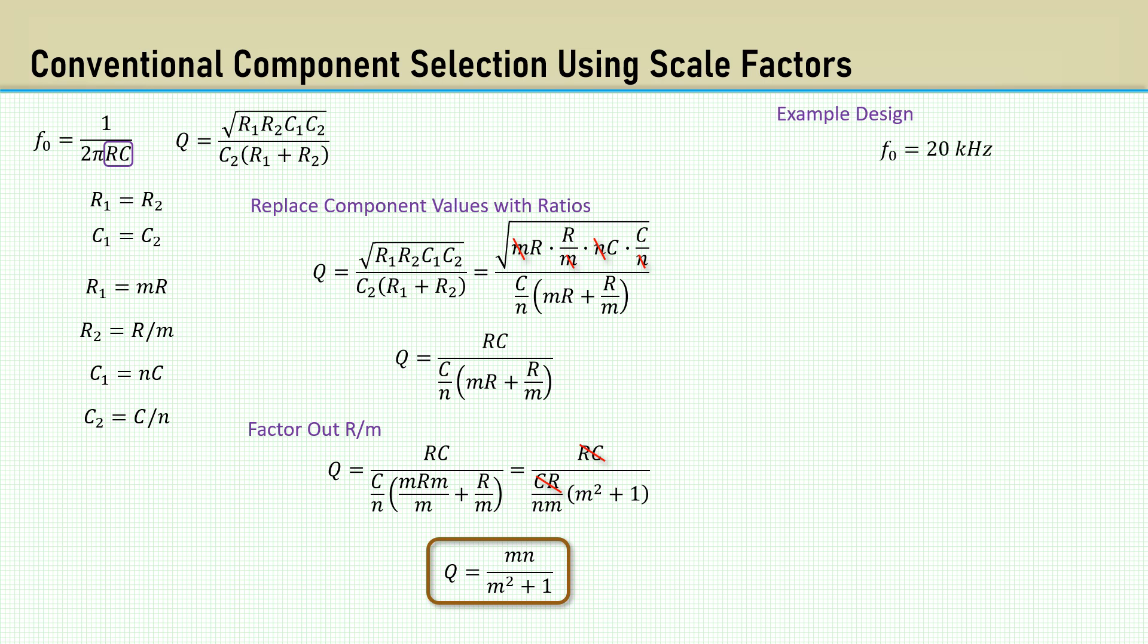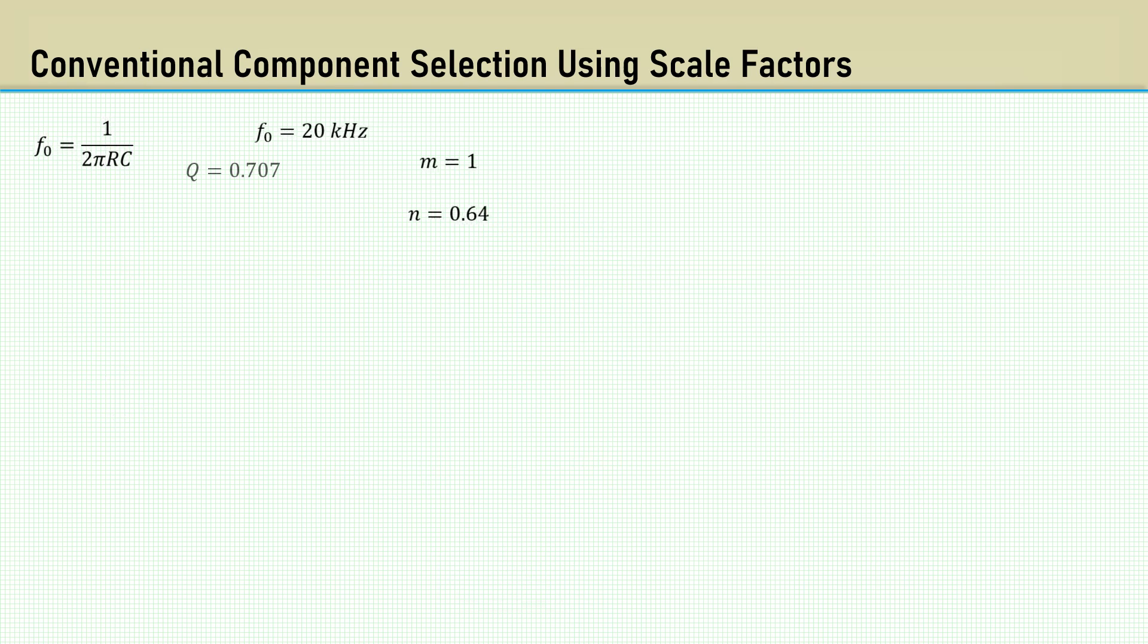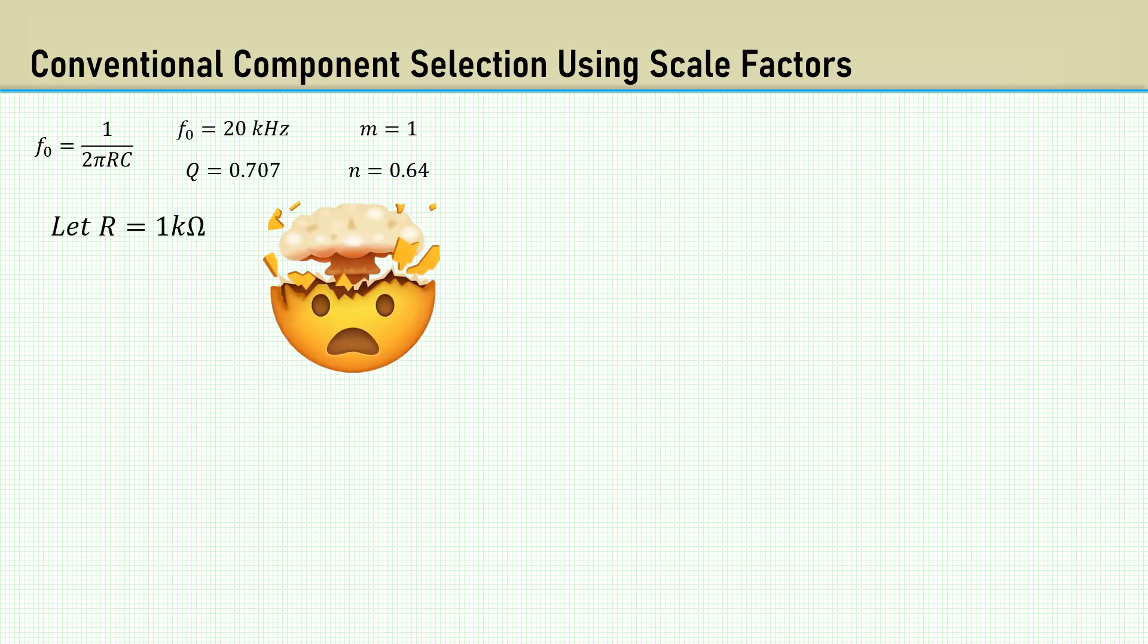Let's look at the example design with a cutoff frequency of 20 kHz and a Q of 0.32. Rearrange the equation to solve for N. We will assume M is 1 and get N equals 0.64. There's something that really bothers me, and you see it often in textbooks and videos. Let R equal 1k. But why 1k? While it may be a convenient choice, it's not always practical, but let's roll with it.